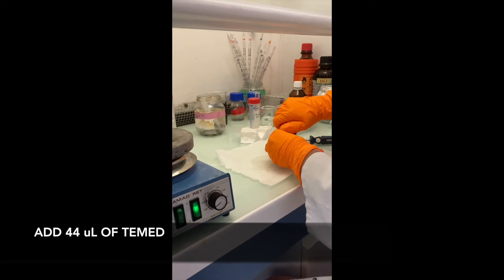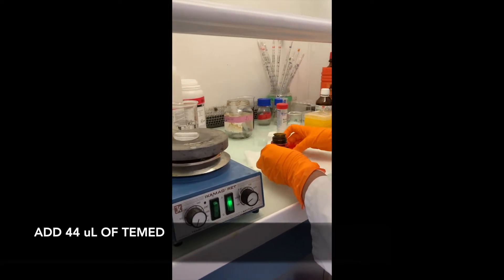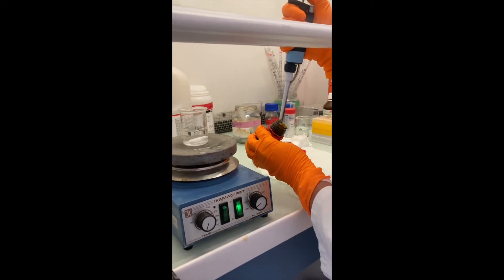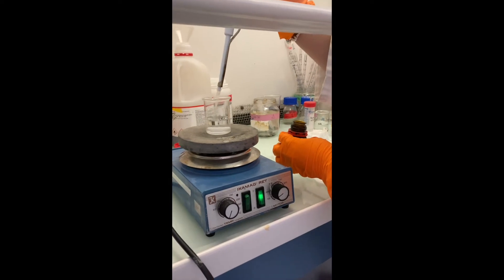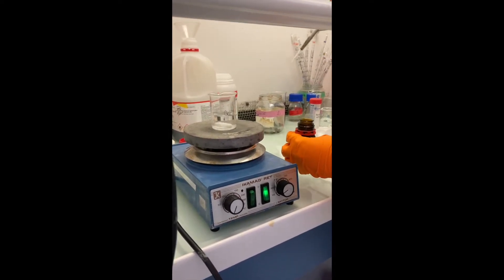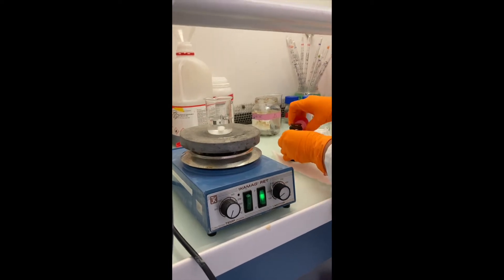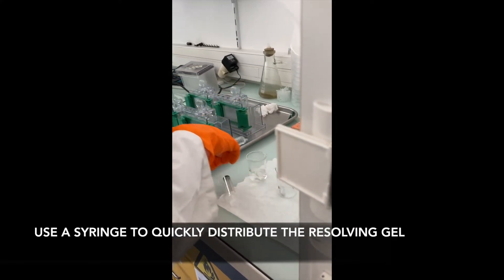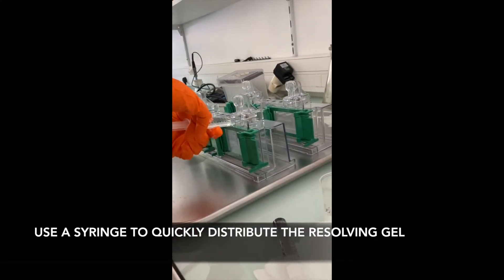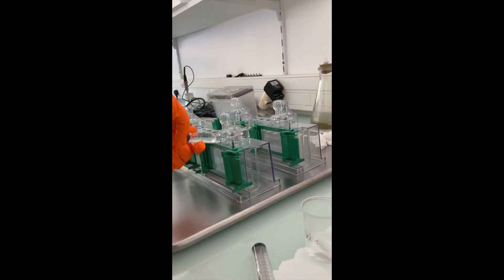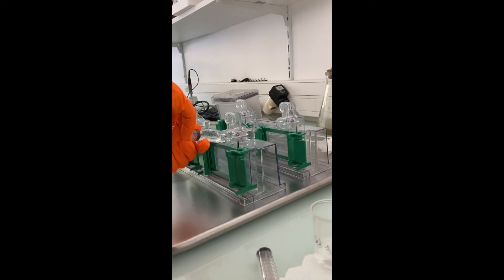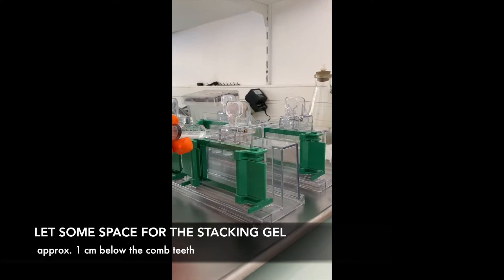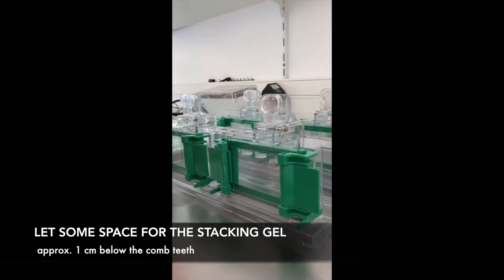Add 44 microliter of TEMED. At this step the gel will start to polymerize quickly so use a syringe to distribute the resolving gel in the four gel sandwiches and let some space for the stacking gel approximately one centimeter below the comb teeth.